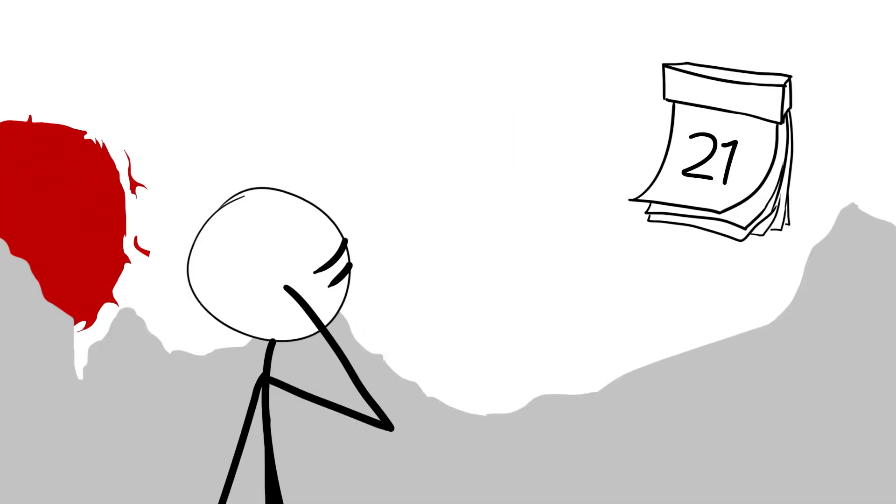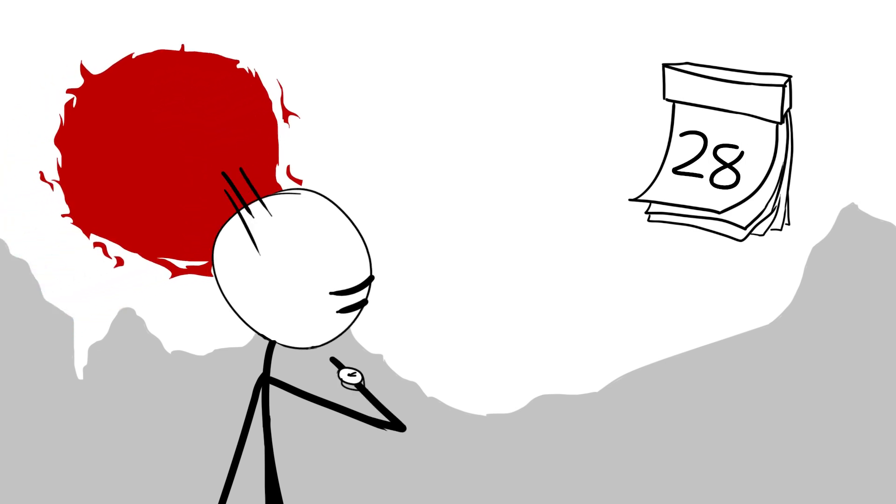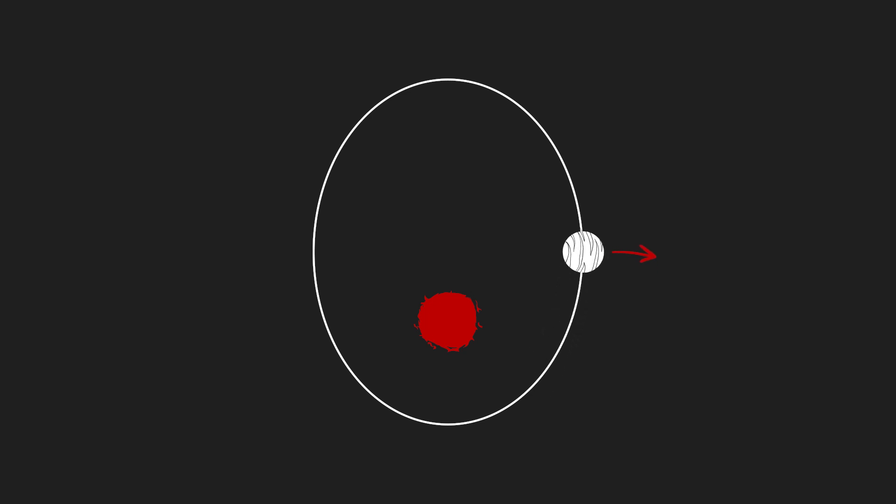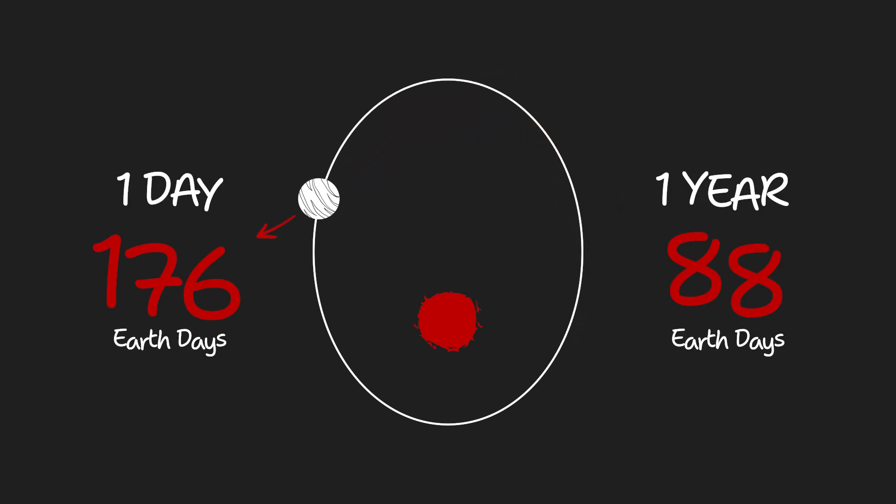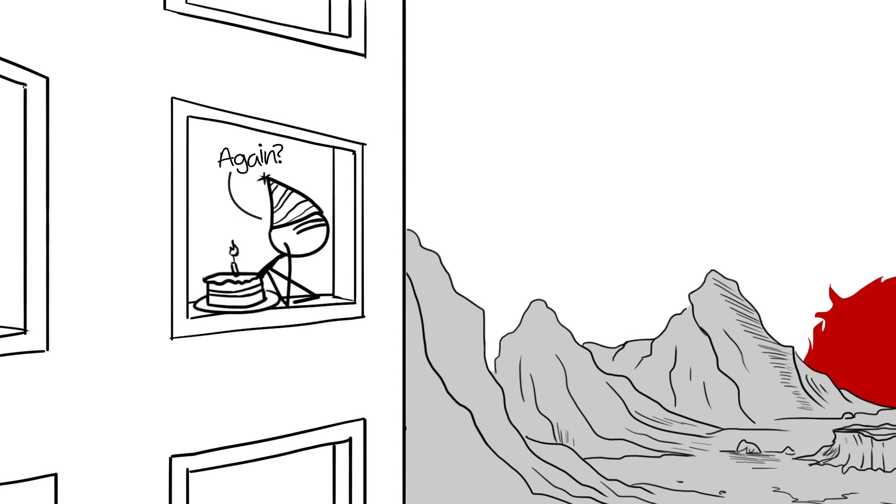You feel like days have passed, but it hasn't even been an hour. Time here plays tricks on you. A year on Mercury is only 88 Earth days, but a single day lasts 176 Earth days. The sun takes months just to rise and set. You could celebrate your birthday twice before seeing another sunrise.